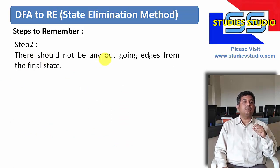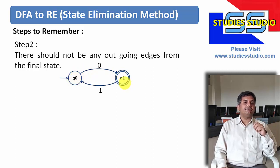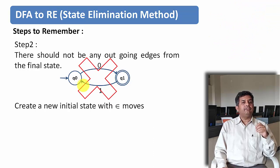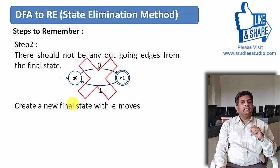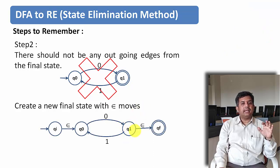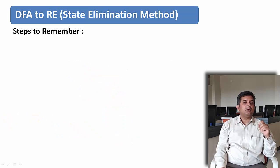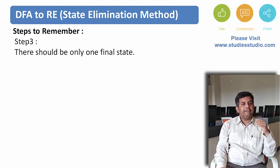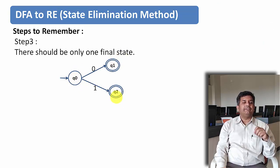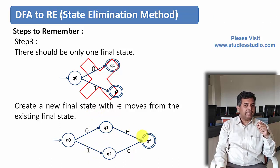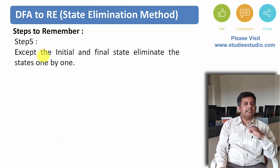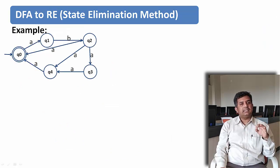The second thing to take care of: there should not be any outgoing edges from the final state. If q1 is the final state and there is an outgoing edge from it, such a thing is supposed to be avoided. A new final state with an epsilon move is supposed to be created — from q1 there will be an epsilon move to the new final state. The third step is there should be only one final state. If we get a finite automata with more than one final state, we will remove those final states using epsilon moves and create a single final state.